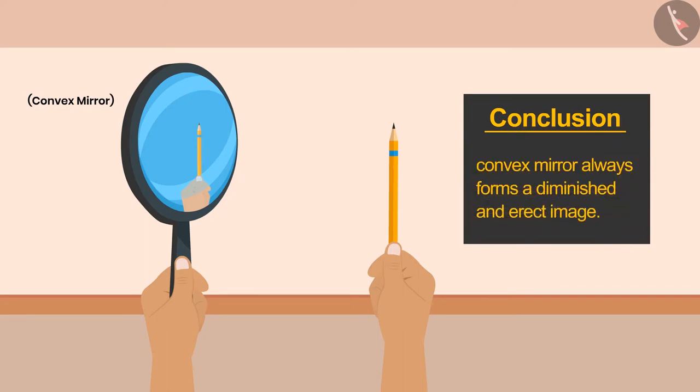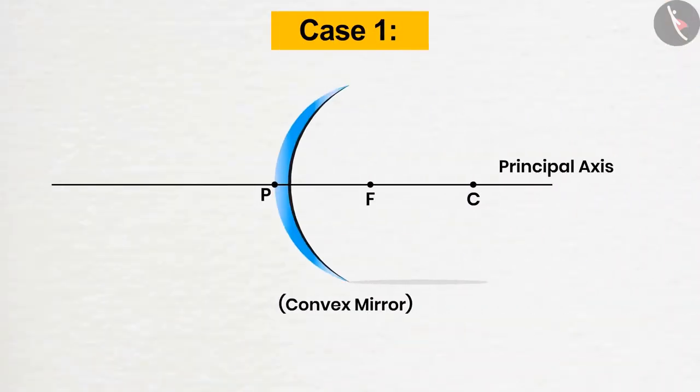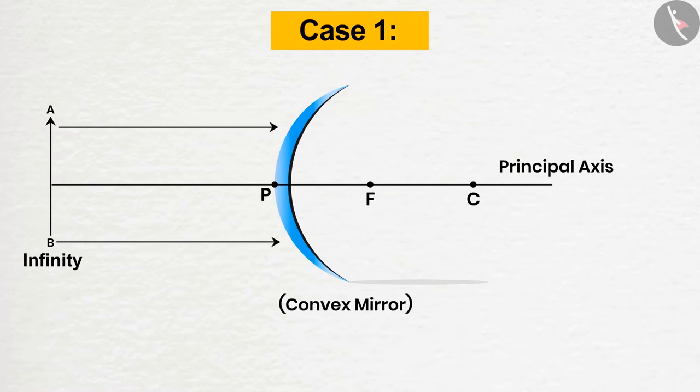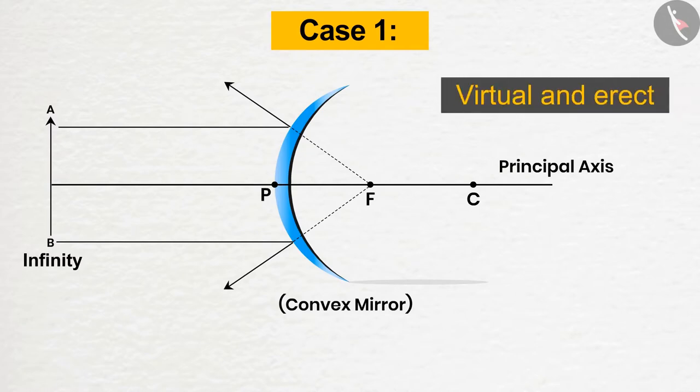If we talk about the ray diagrams, then only two cases can be possible for convex mirror. Case 1: Position of the object at infinity. If the object is placed at infinity, the rays will travel parallel to the principal axis, then get diverged on falling to the mirror and the image appears to be formed behind the mirror. The size of the image formed is very small and its nature is virtual and erect.